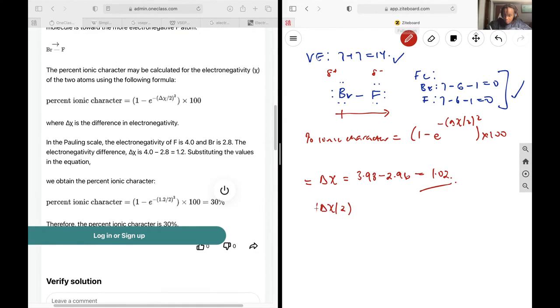And so we're going to get 1.02, which means this value is going to be 0.2601. And so my percent ionic character is going to be 1 minus e to the negative 0.2601 by 100. You just pop that into a calculator, and you should get roughly 23%, and that's going to be your answer.